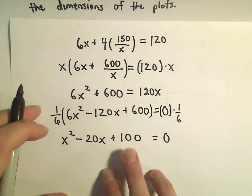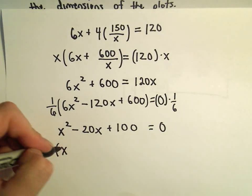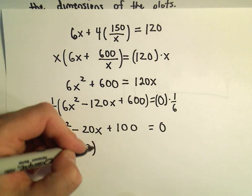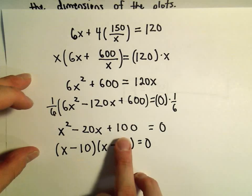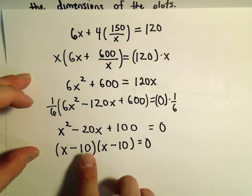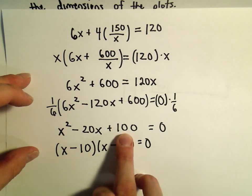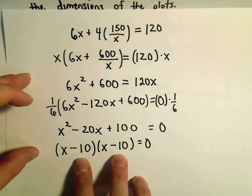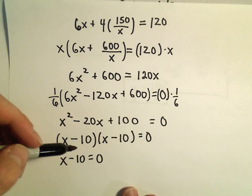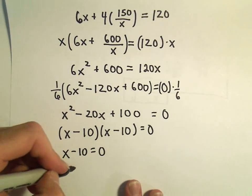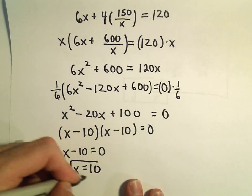Now we're looking for two numbers that multiply to positive 100 but add up to negative 20. We can use x minus 10 and x minus 10. If you multiply them, they give you positive 100. If you add negative 10 plus negative 10, you get negative 20. So we set each factor equal to 0. Adding 10 to both sides, we get that x has the value 10.